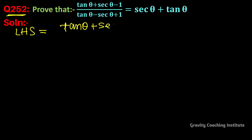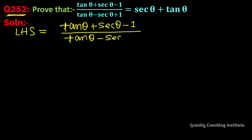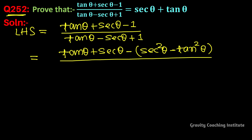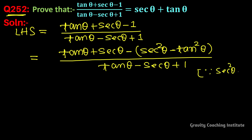We write the LHS: tan theta plus sec theta minus 1 upon tan theta minus sec theta plus 1. We will replace this 1 with sec squared theta minus tan squared theta, since sec squared theta minus tan squared theta equals 1.